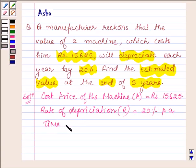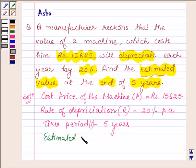And the time period at which we have to find the depreciated value is 5 years, denoted by T. We have to find the estimated value at the end of 5 years, so let us denote it by A.